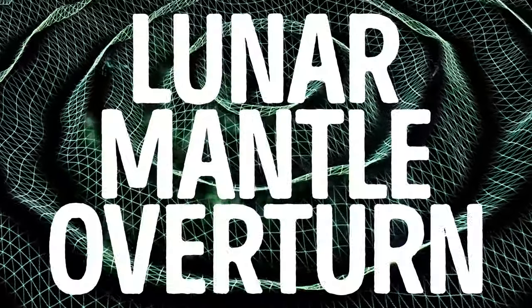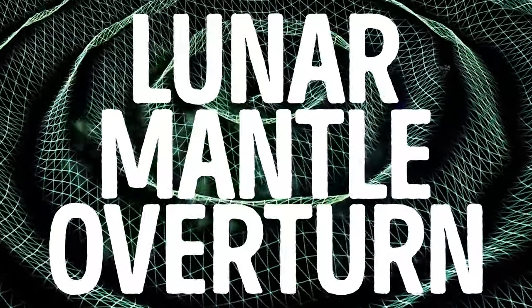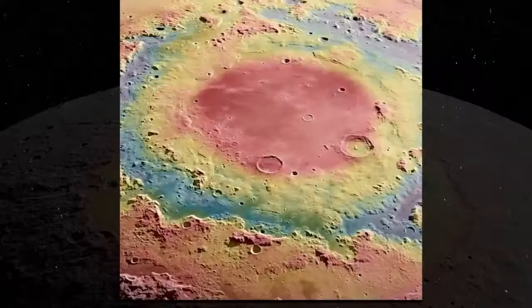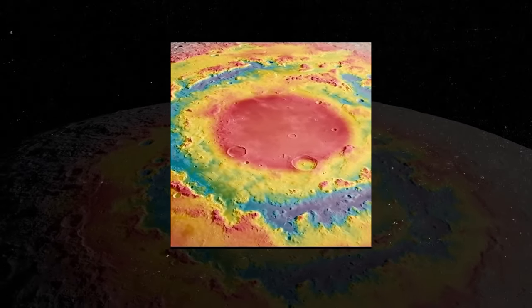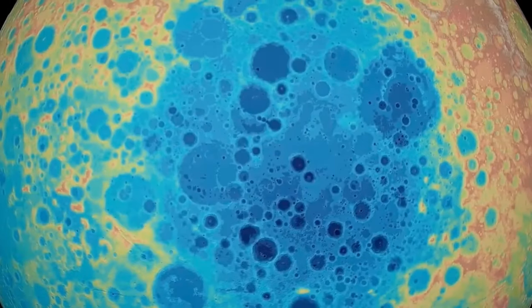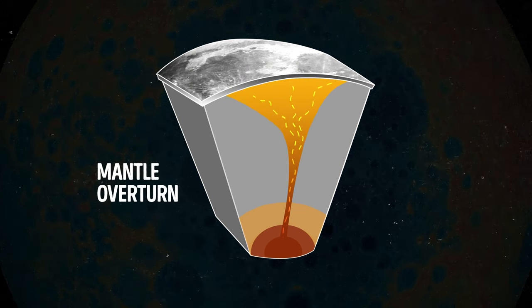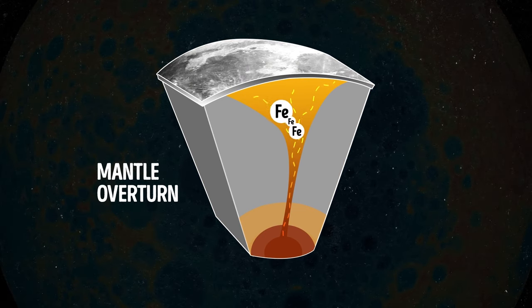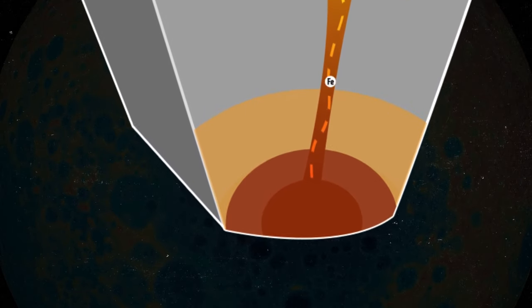This movement is something we call lunar mantle overturn, and it could explain why we find elements rich in iron on the lunar surface. Mantle material ends up being carried upward, and the volcanic rock remains in the moon's crust. Some of the materials in this rock were too dense, like me, so they just sank back through the lighter crust material all the way to the core mantle boundary.